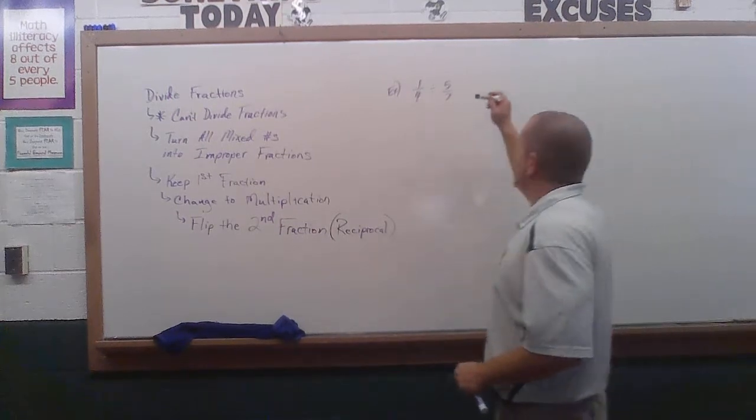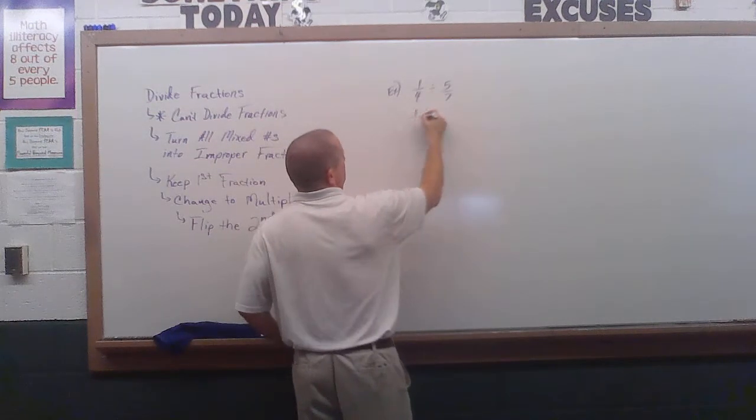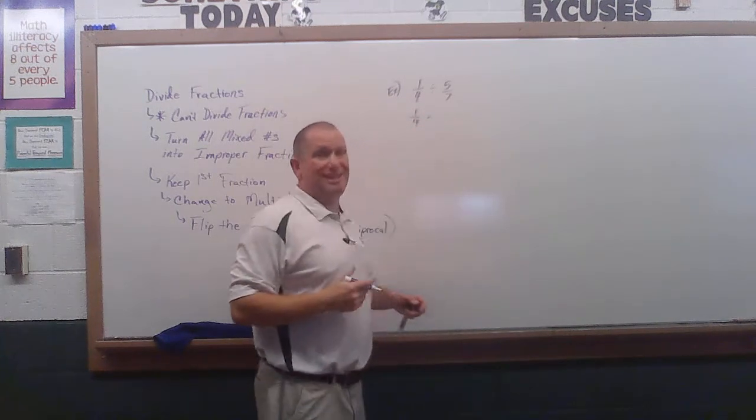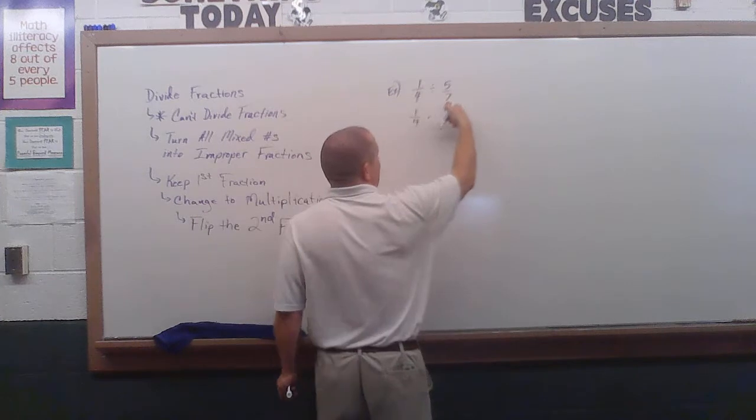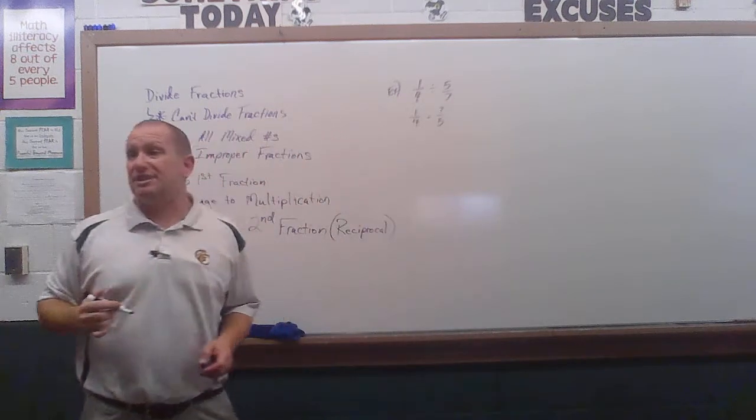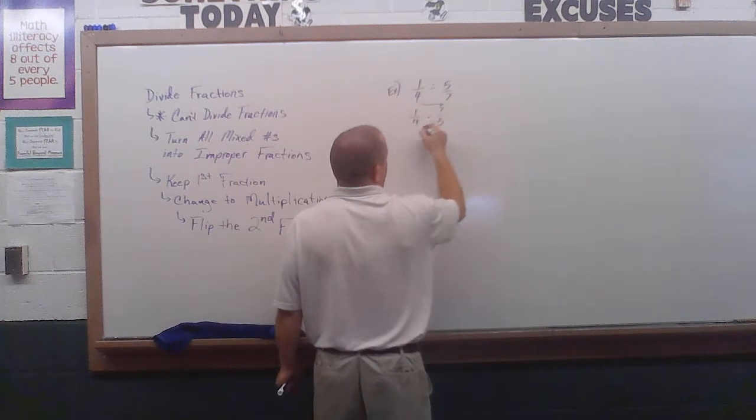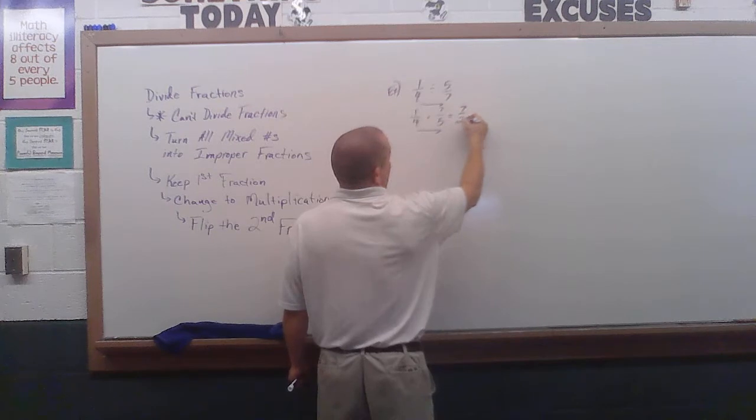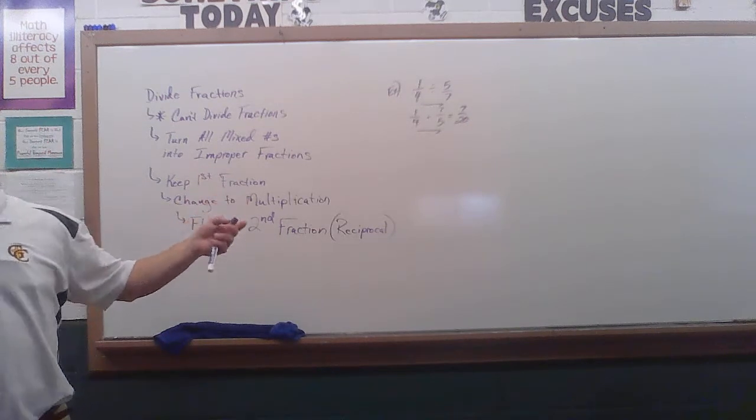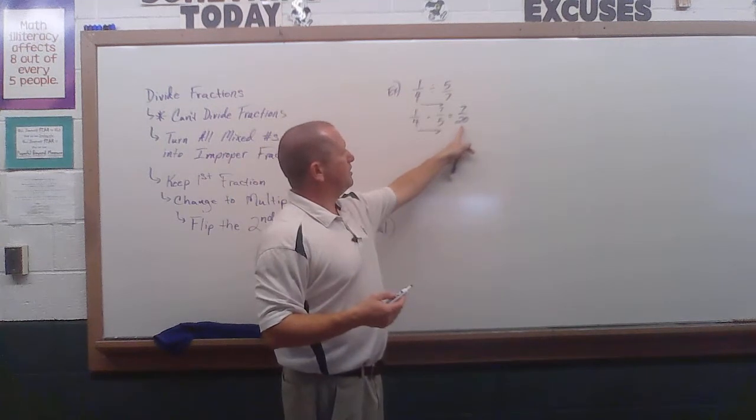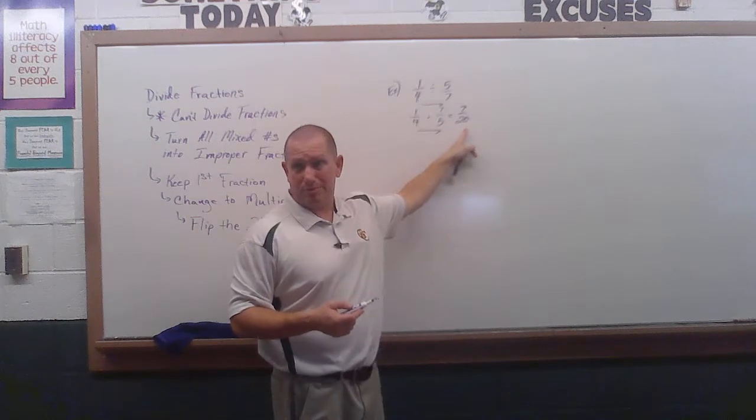All right, here we go. So, again, do not look at this problem right here and think about reducing. I've got to first do my process. So as you said, we're going to keep the first one. We're going to change it to multiplication. Again, be careful with using an X, because towards the end, we'll actually put in variables. And then we're going to flip my fraction. So, again, every single problem might not include reducing. So then we're just going to multiply, right? Multiply straight across the top, multiply straight across the bottom. And then the very last thing that we should still do is look to reduce.